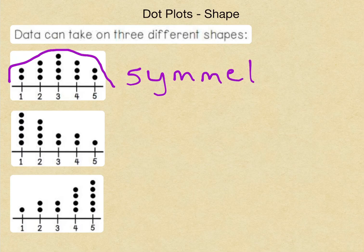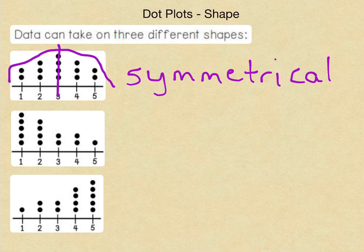So that means that this is symmetrical data. Symmetric or symmetrical. That means we have a line of symmetry that shows the same amount of points on both sides. Now, sometimes it's exactly symmetrical, and sometimes it's very close.